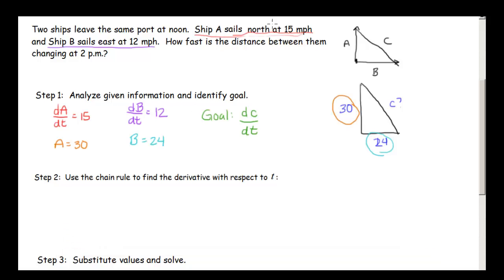Glad you're back. Ship A sails north at 15 mph, so dA dt is 15. Ship B sails east at 12 mph, so dB dt is 12. We already found that A is 30 and B is 24. And our goal is to figure out how fast is that distance between them changing at 2 pm. So our goal is to figure out how our C, our distance between the two boats, is changing. So that's dC dt.